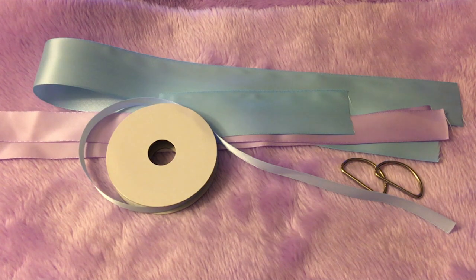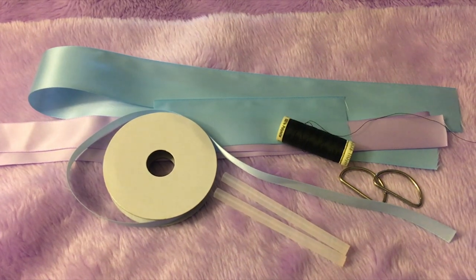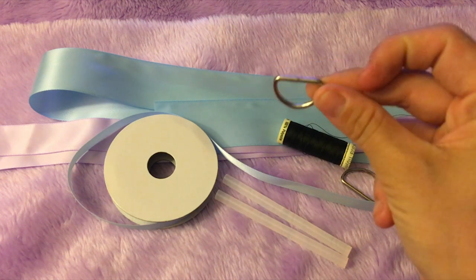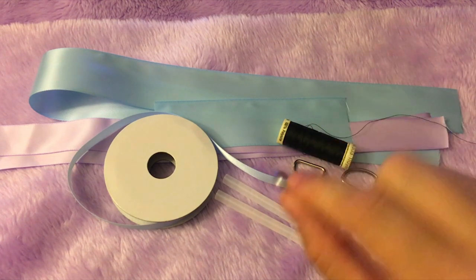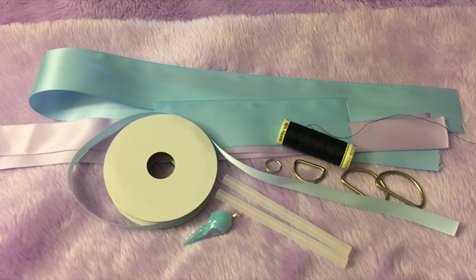Two large d-rings, some thread, some hot glue, a small d-ring for the middle section but you can also use a jump ring, either or that works best for you. Lastly you'll be needing a charm or a bell, but for this project we're going to be using a charm.